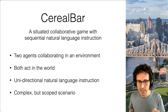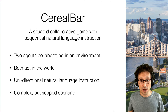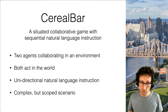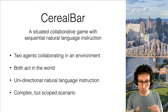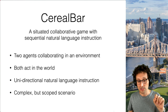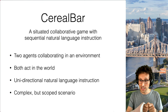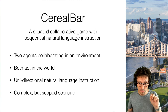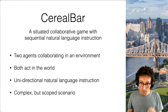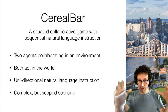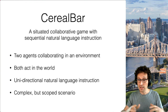Serial Bar is a collaborative game that instantiates this kind of interaction scenario with sequential natural language instruction. In Serial Bar, there are two agents that collaborate in an environment — both act in the world. There is a unidirectional natural language instruction channel: one agent is a follower, another is a leader, and natural language only goes from the leader to the follower in the form of instructions. This scenario is relatively expressive but scoped, allowing us to focus on more complex or weaker learning signals.